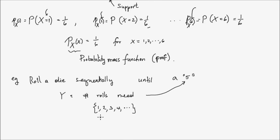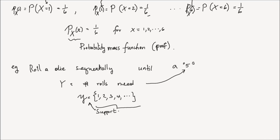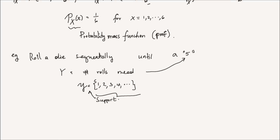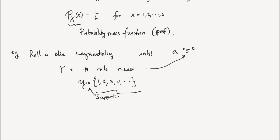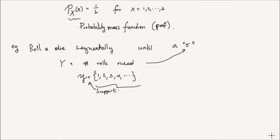Therefore, the support of the random variable y — I'm going to denote that by script y — is that set, and that's the support of the random variable y. For each value in the support, I could find a probability mass for y.